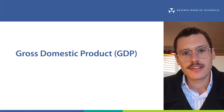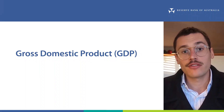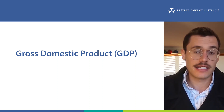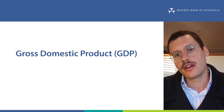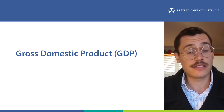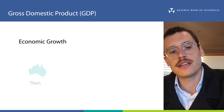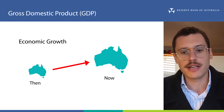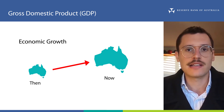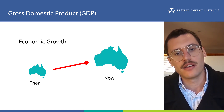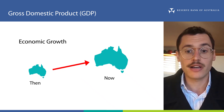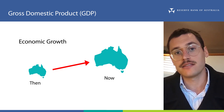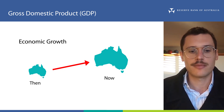Hi, Gigi from the RBA. In this video on economic growth, we're going to talk about gross domestic product or GDP. Economic growth refers to how the size of an economy changes over time, and the size of an economy is generally expected to increase over time. When most people hear the term economic growth, they think of GDP. GDP is the most well-known method used by economists to measure the size of the economy, and the change in GDP over time is often referred to as economic growth.